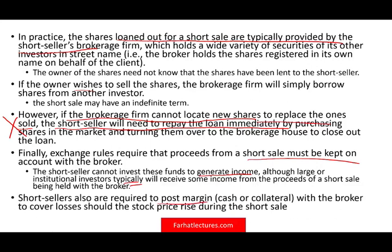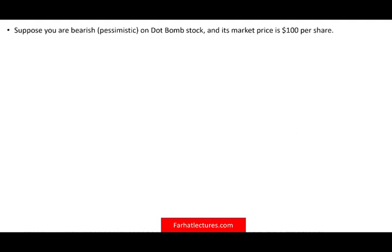Short sellers are also required to post margin — collateral, either cash or other securities — with the broker to cover losses should the stock rise during the short sale. If the stock price keeps rising, you face increasing pressure. The broker, fearing you'll walk away without buying back, requires you to post margin, and if the price rises too high, they'll ask for more margin or require you to close your position.